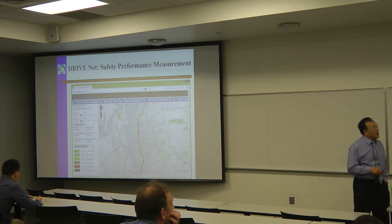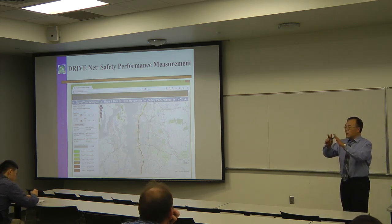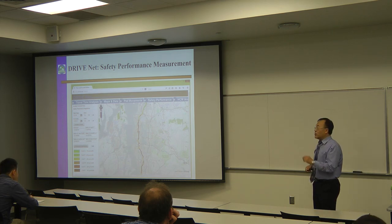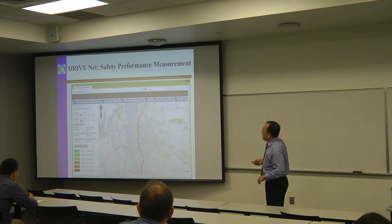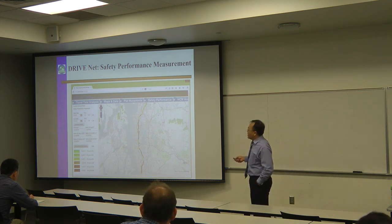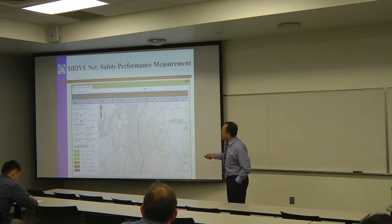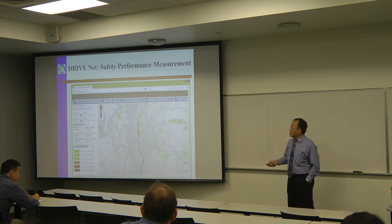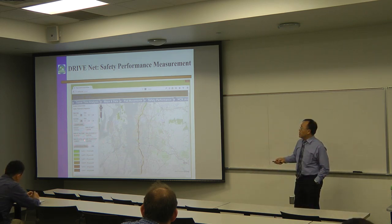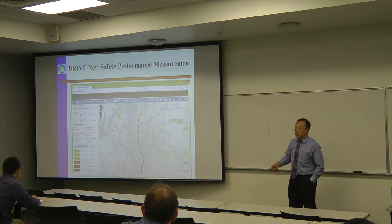Safety analysis — this is system-wide rather than for a particular location. We can see the observed accident counts and use models to see what the expected number of accidents would be. You can also use different models; this one is based on the Highway Safety Manual approach. But if you have a better model, you can replace it with your own. If it performs well, you can save it for others to use later. This is a function we're still working on.